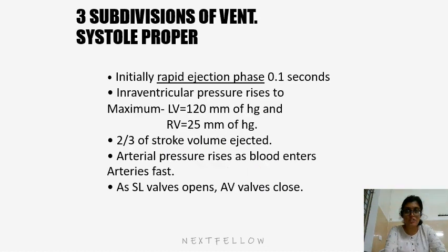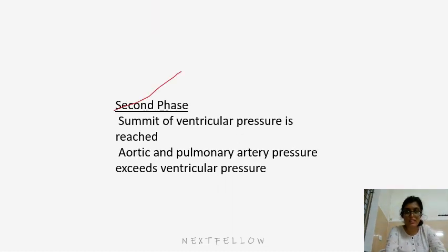There are three subdivisions of ventricular systole proper. Initially, the rapid ejection phase lasts 0.1 seconds; intraventricular pressure rises to a maximum — left ventricle 120 mmHg and right ventricle 25 mmHg. Two-thirds of stroke volume is ejected, and arterial pressure rises as blood enters the arteries. As the semilunar valves open, AV valves close. In the second phase, the summit of ventricular pressure is reached, and aortic and pulmonary artery pressure exceeds ventricular pressure.